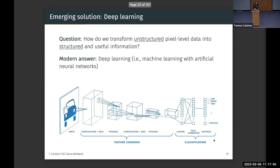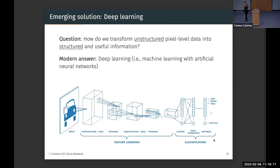The modern answer has been deep learning — machine learning with artificial neural networks. The idea is that you start with an image, say an image of a car, and you want to classify it as a van, truck, or bicycle. A convolutional neural network designs an entire pipeline with nonlinear operations at the pixel level to make that classification. This same approach lets us take an image of a forest and determine the density, productivity, or biodiversity of that forest.